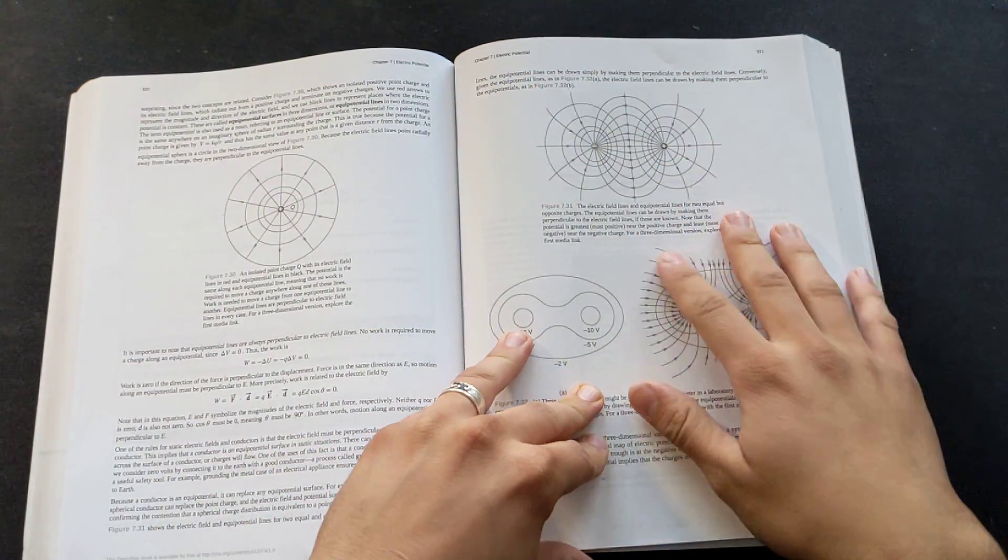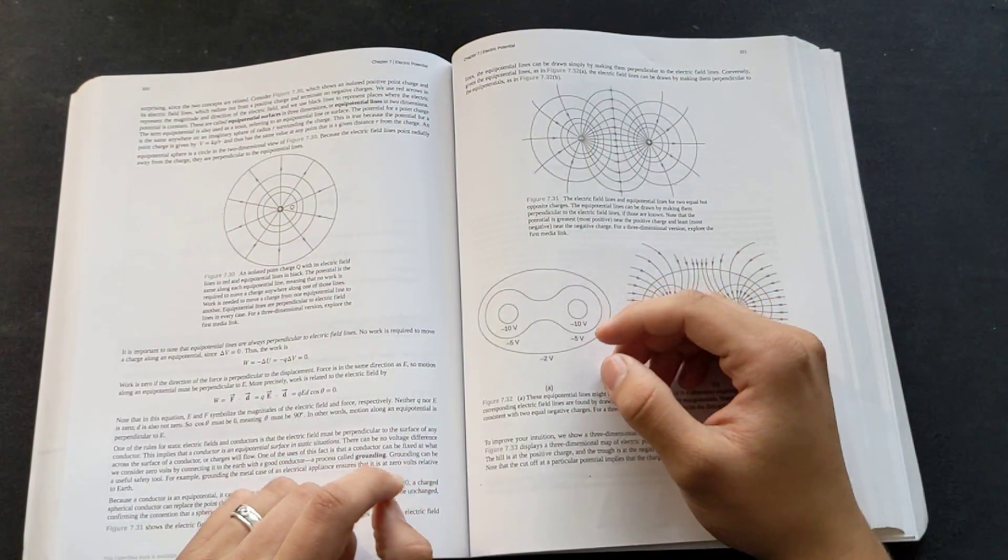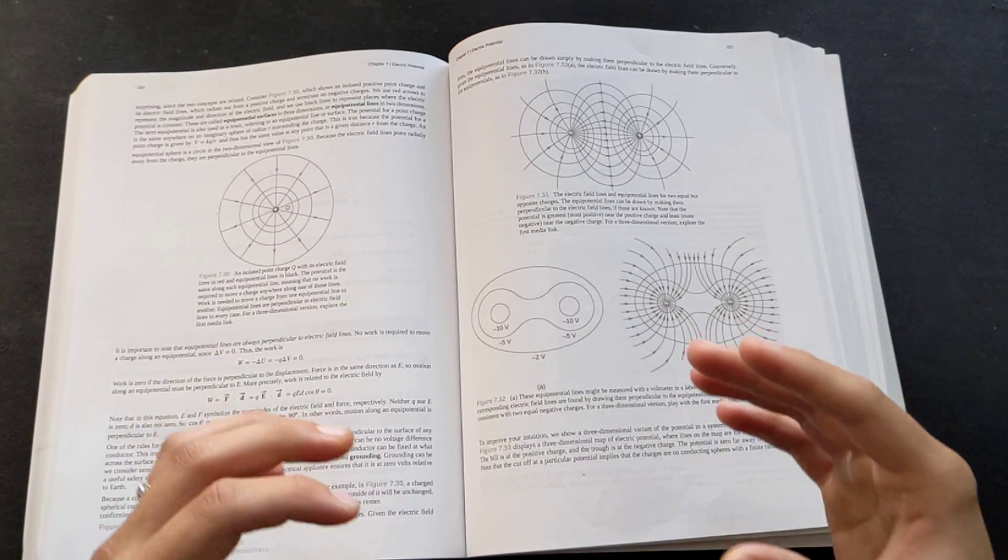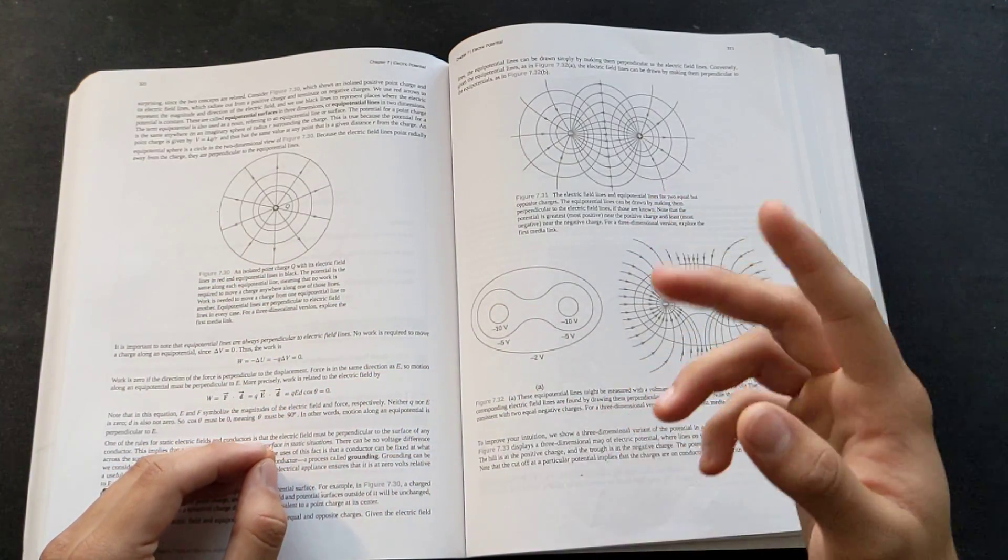We cover something called electric potential, where we talk about how point charges in space interact with each other. These charges are quantized, which, if that word sounds familiar, it's one of the ways that we first started looking at things that are basically not infinitely divisible.